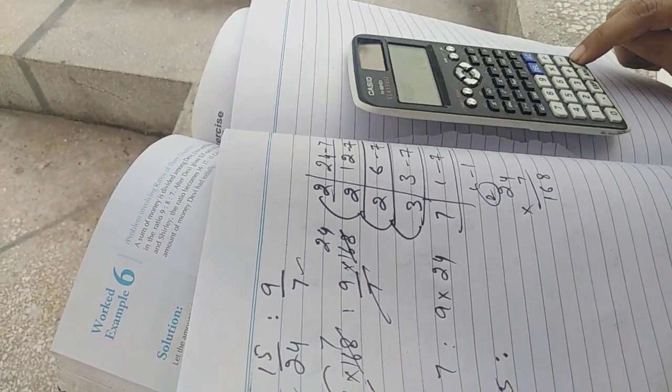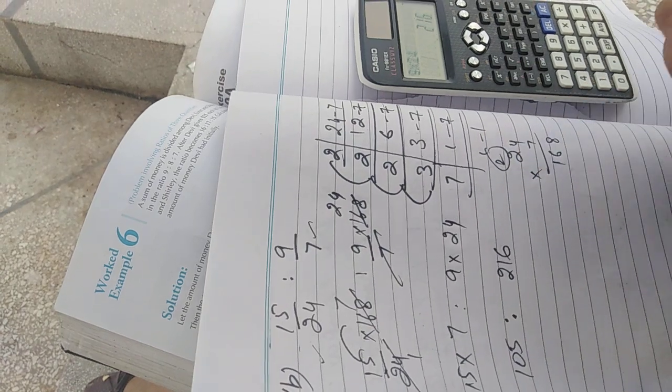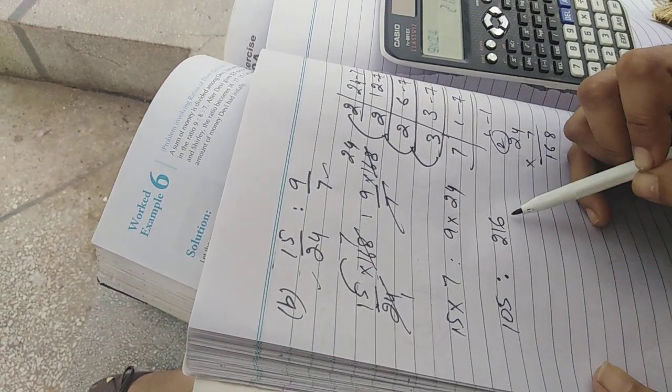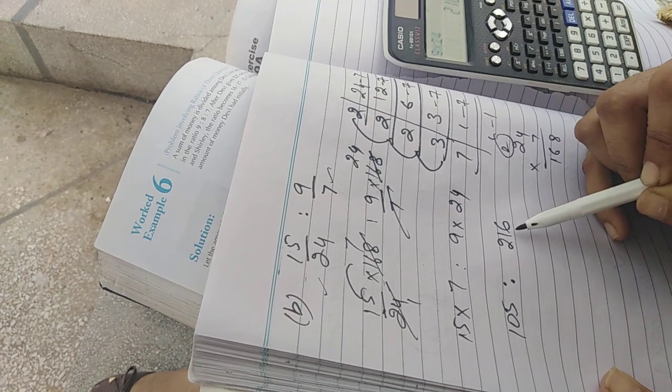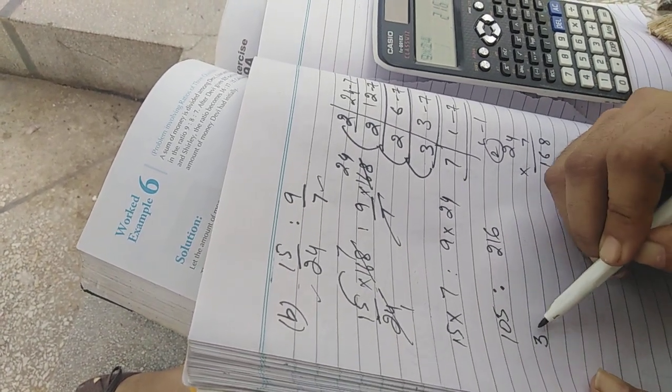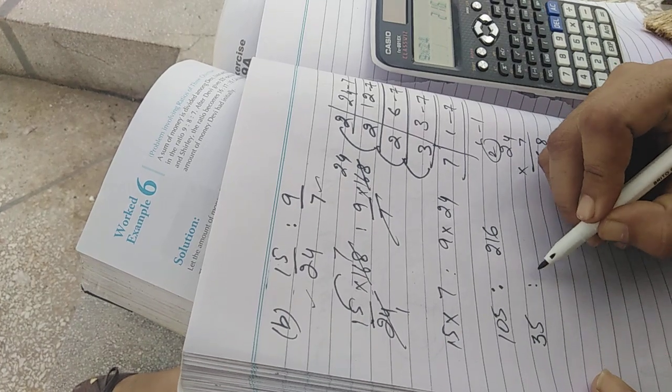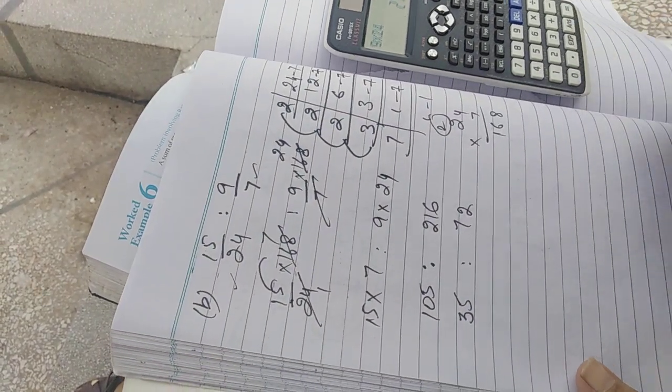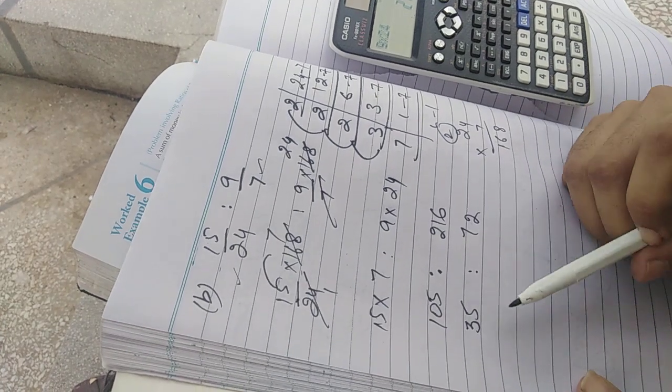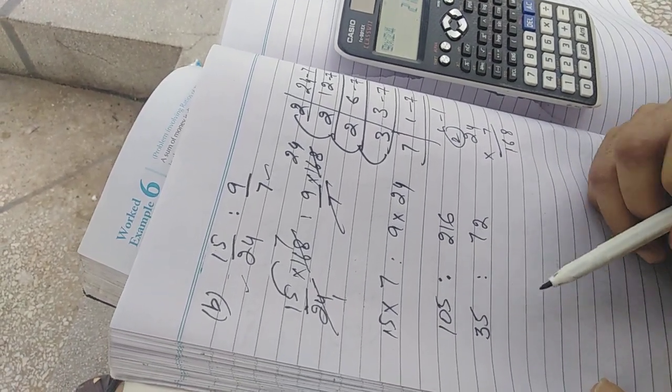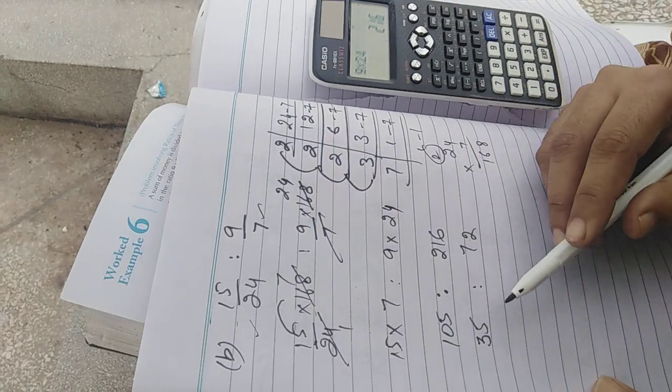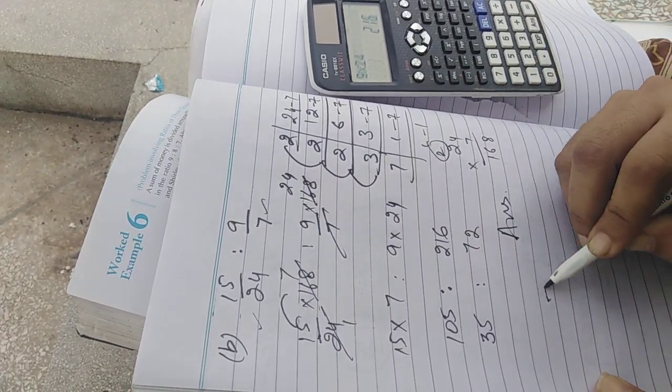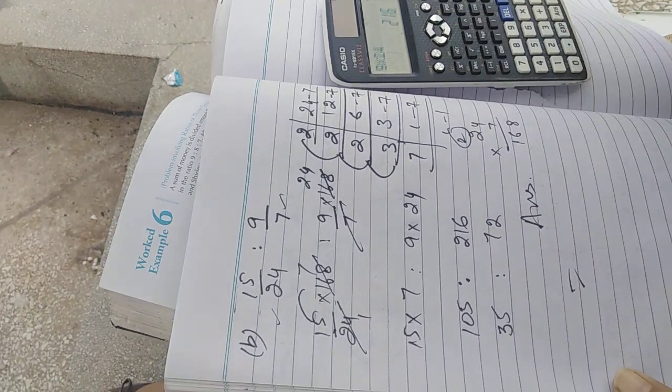And multiply 9 with 24, it will become 216. Now can you simplify these two numbers? Yes, divide by 3: 3 fives are 15, 3 sevens are 21, 3 twos are 6. Can you further divide? Now these two numbers are not divided by any other number, so this is our answer: 35 ratio 72.